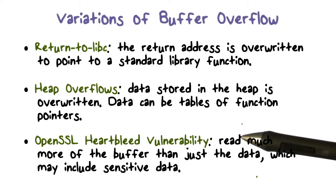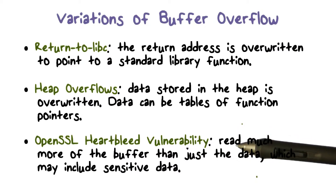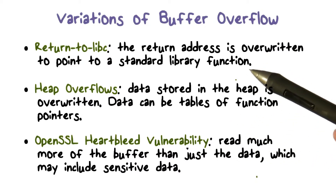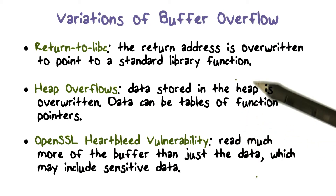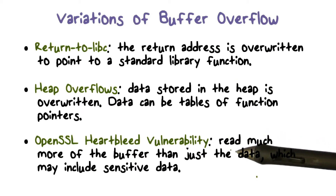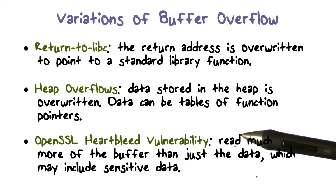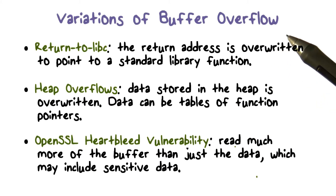It was an overflow-related vulnerability, but it wasn't writing into the stack beyond the memory allocated for the variable into which we were writing. It was actually a read overflow vulnerability. What OpenSSL Heartbleed did is that it kept reading beyond the variable that you're supposed to read. And there was some juicy stuff beyond that to do with keys and things like that. So if you read too much, you're going to get additional data beyond what should really be in the variable that you're trying to read.